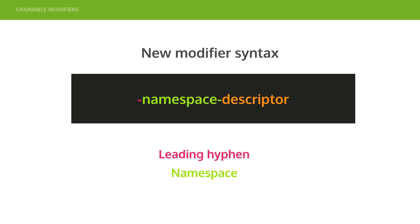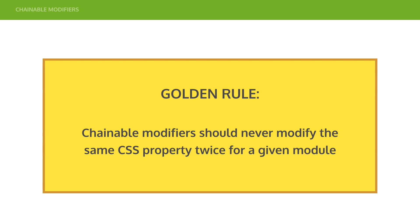Or it could be size — font size, border radius — as long as you group things together it's fine. Then you have a descriptor, and your descriptor should be generic. You shouldn't say 'green', it should be 'primary'. You shouldn't say '16 pixels', it should be 'large' or whatever you want to call it — try to be generic so you'll have freedom to change your styles down the track. The golden rule is that chainable modifiers should never modify the same property twice for a given module. If you've got -color-something and -size-something they should never override each other, so it won't matter what order things happen and you won't clobber your styles.